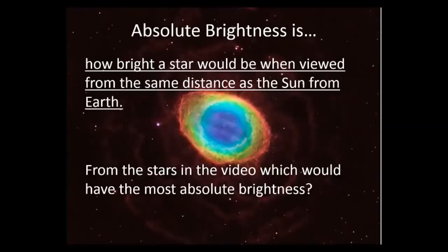Absolute brightness is how bright a star would be when viewed from the same distance as the sun from Earth. So if you lined up all the stars in a line the same exact distance away, that would be absolute brightness. That way they're all at the same distance. So from that video, which one would have the most absolute brightness?